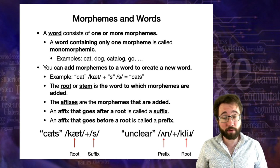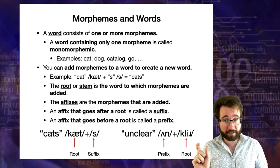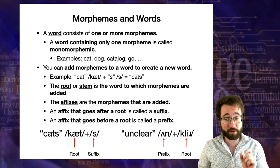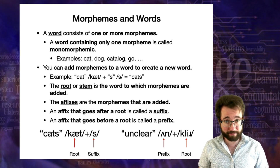When an affix goes after a root, it's called a suffix. When an affix goes before a root, it's called a prefix. In 'cats,' we have the root 'cat' followed by the suffix plural s. In the word 'unclear,' we have the prefix 'un' and then the root 'clear.'